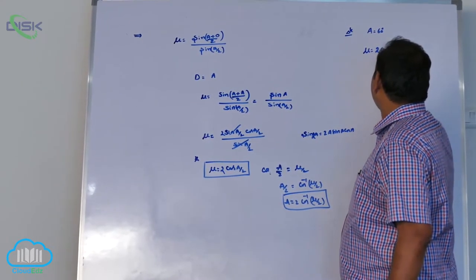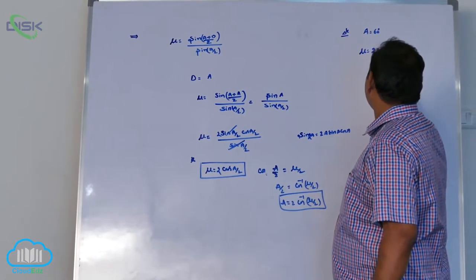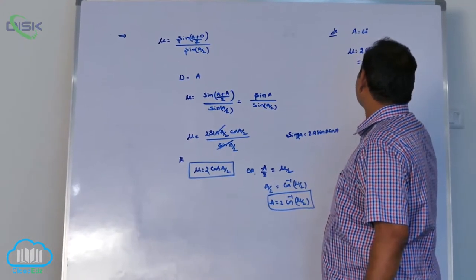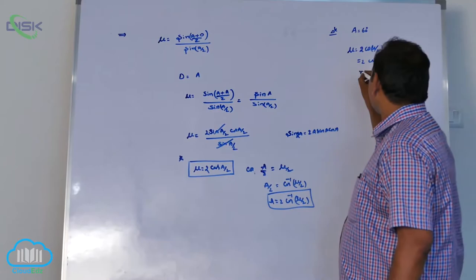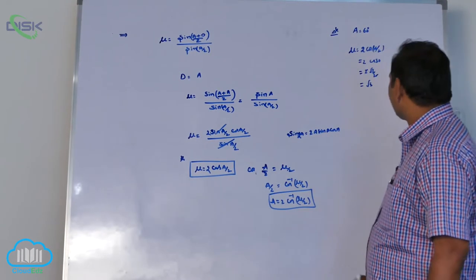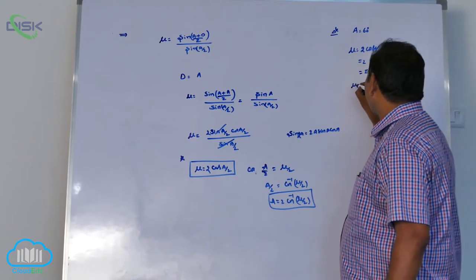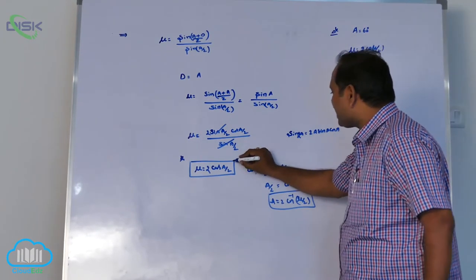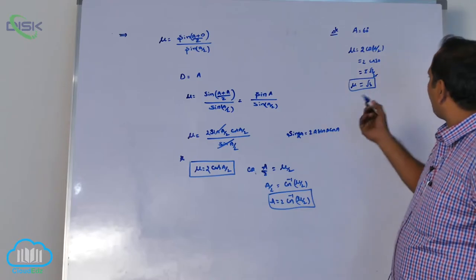Mu equals 2 into cos 60 by 2. That is 2 into cos 30. Cos 30 is what? Root 3 by 2. So, 2 into root 3. 2 to cancel, mu equals root 3. Like this, where you can use it as a shortcut for competitive purpose.